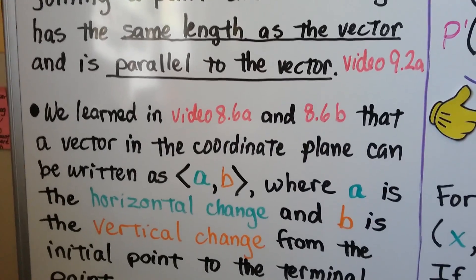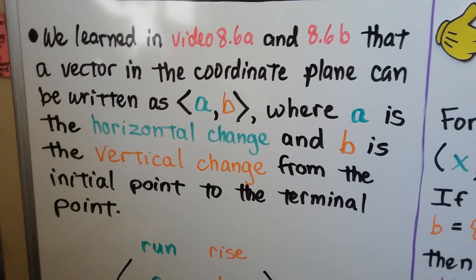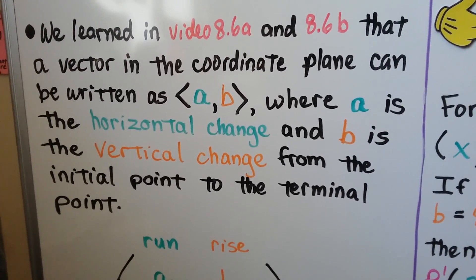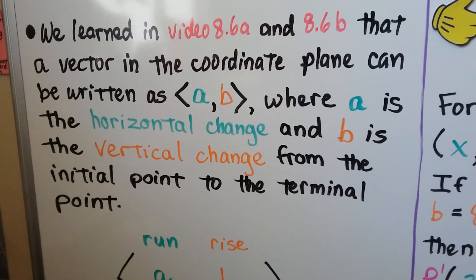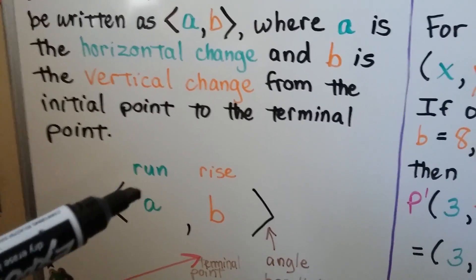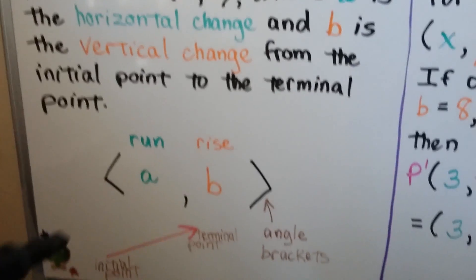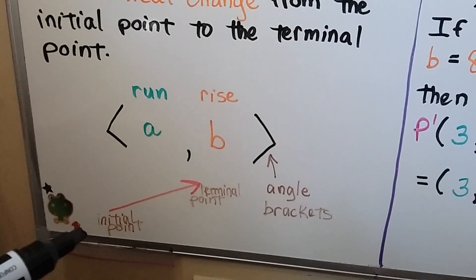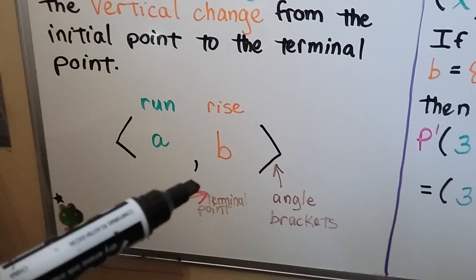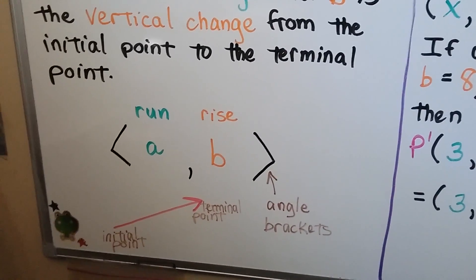We also learned in videos 8.6a and 8.6b that a vector in the coordinate plane can be written as <a, b>, where a is the horizontal change and b is the vertical change from the initial point to the terminal point. So a is our horizontal change — that's our run — and b is our vertical change — that's our rise — and they're in these angle brackets. The initial point is where the vector starts (the tail), and the terminal point is the tip or head.